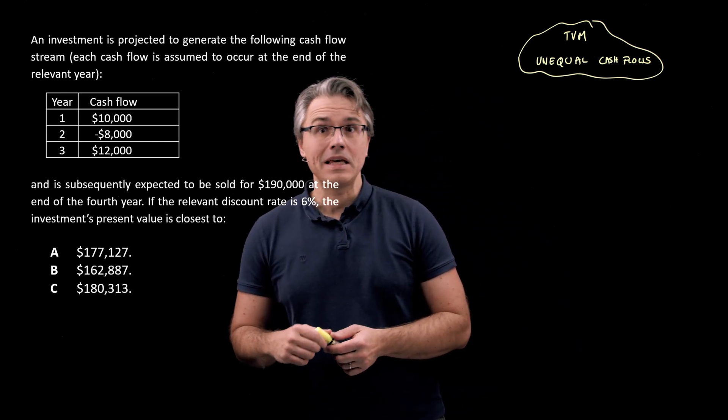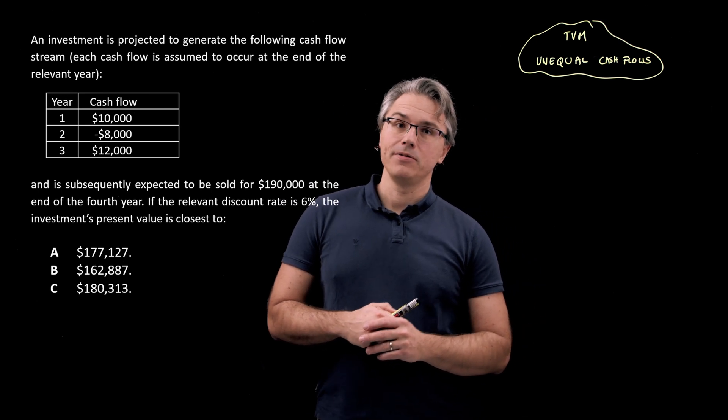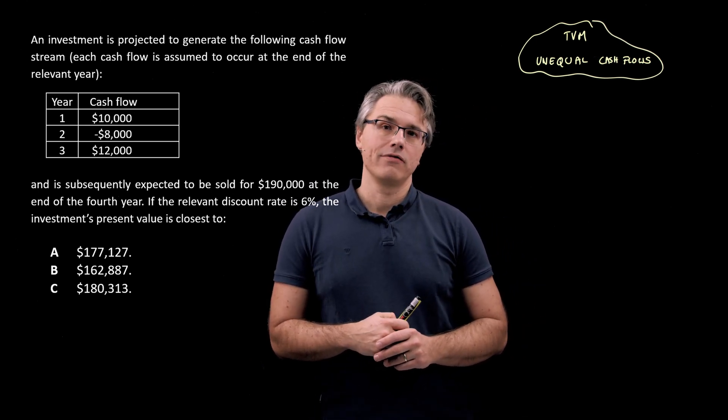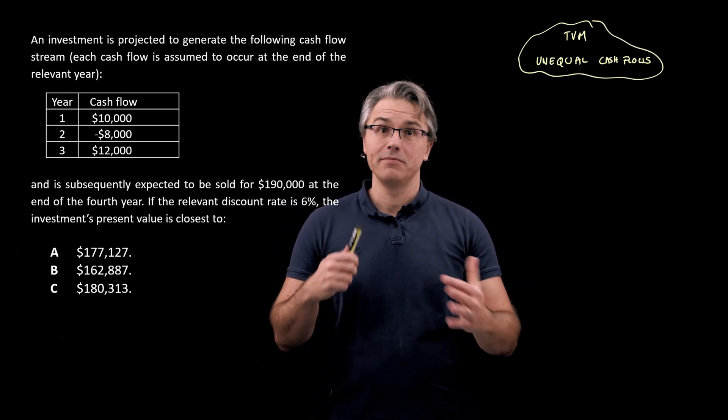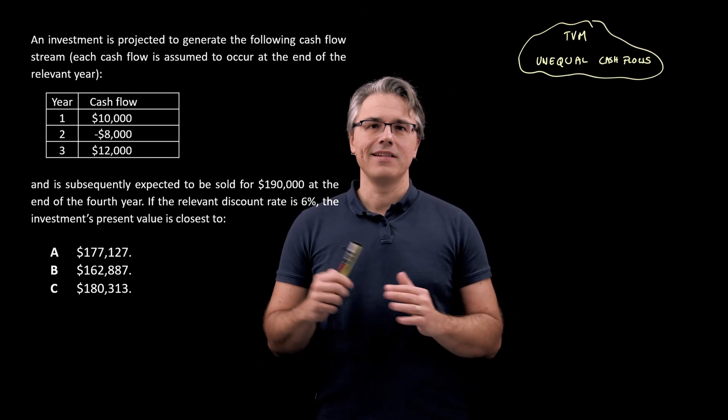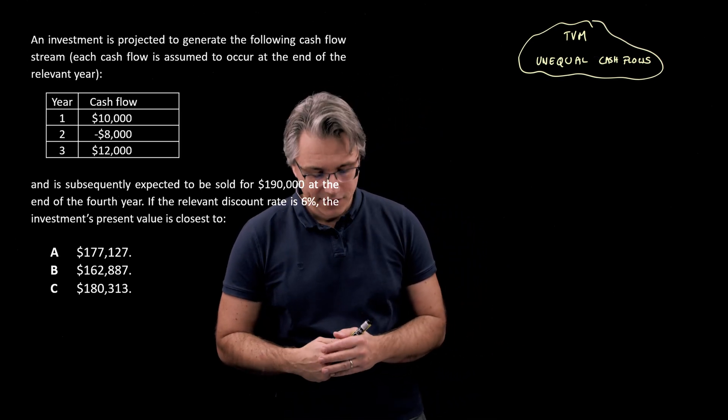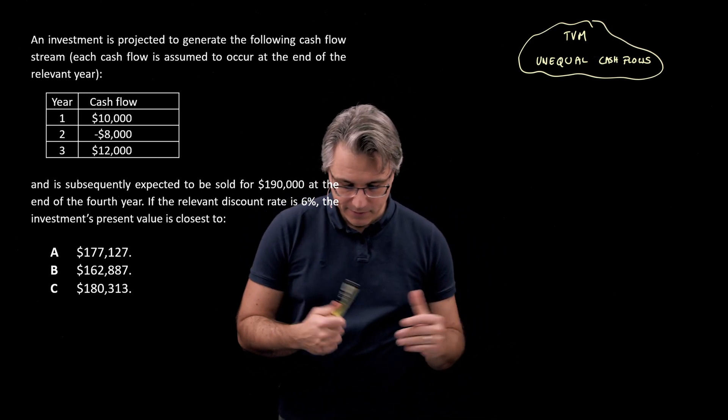So this is another PV problem. But this time we can't use the classic time value of money worksheet with the PMTs, for example, because that only works when you've got equal level cash flows, which would form an annuity. So can't use the TVM worksheet. What can we do instead?